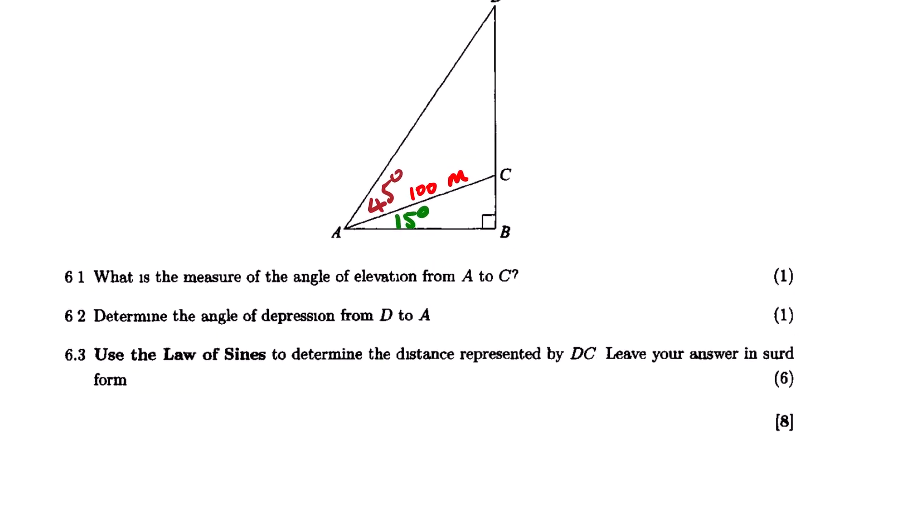The first question is, what is the measure of the angle of elevation from A to C? So we are looking at this line. You can see the angle of elevation, it's actually this one. So the answer to this question, we are simply going to say it's 15 degrees. That is why it is allocated one mark.